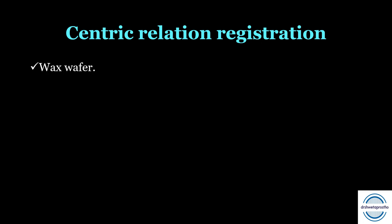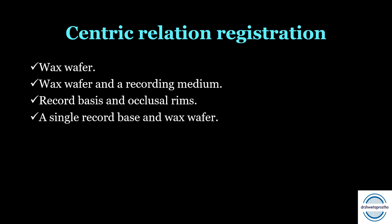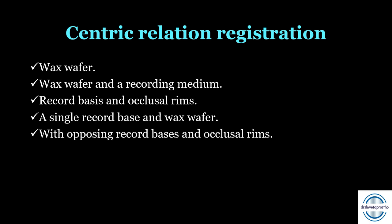To establish occlusion we need to record the centric relation or centric occlusion — that is, the maximal intercuspation. Materials needed include: a wax wafer, or a wax bite with a recording medium; record bases and occlusal rims as made for a complete denture; a single record base and wax wafer if a single denture opposes the RPD; and opposing record bases with occlusal rims when there are large edentulous spaces in both arches.